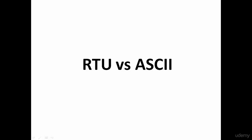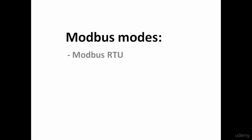When the Modbus protocol was developed, the specification implemented two different modes of operation. The two modes were Modbus RTU and Modbus ASCII. ASCII is pronounced 'ASCII' and it's really the American Standard Code for Information Interchange.